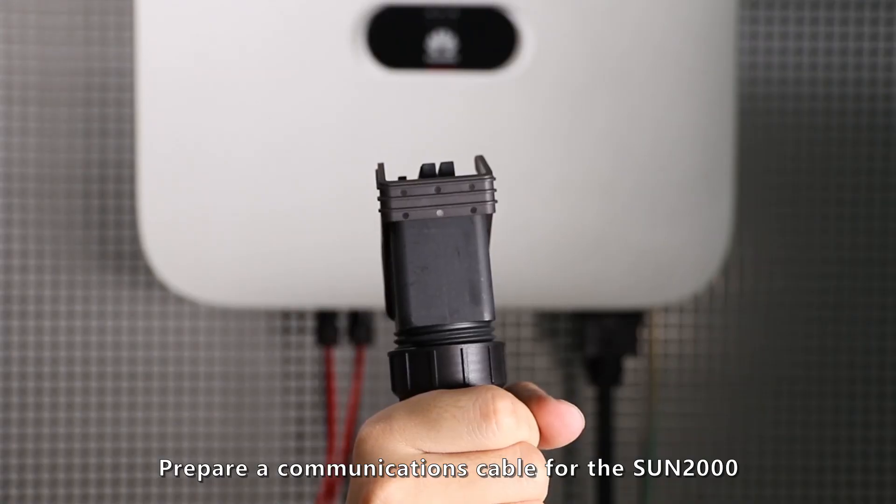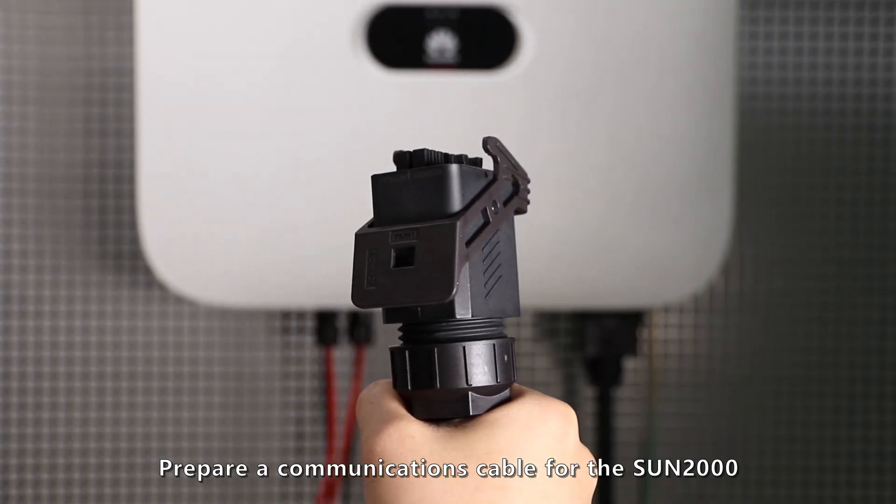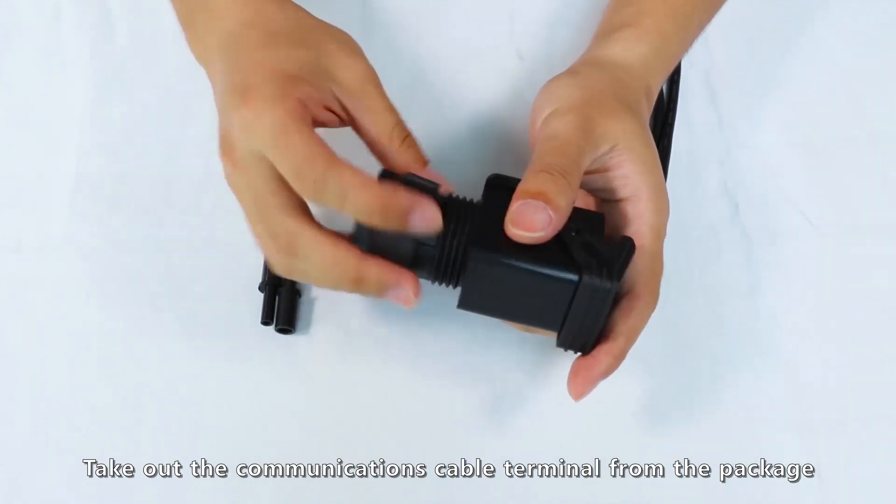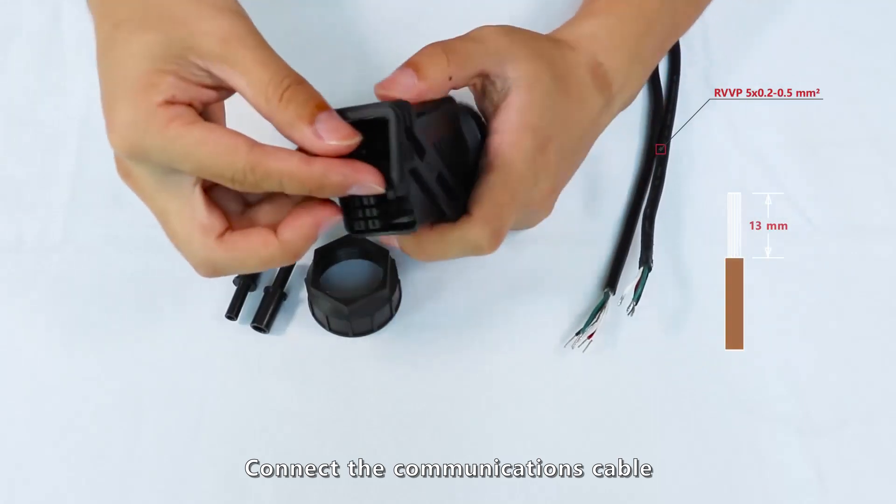Prepare a communications cable for the Sun 2000. Take out the communications cable terminal from the package. Connect the communications cable.